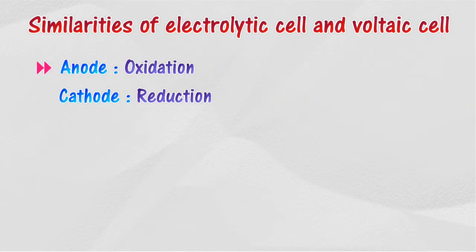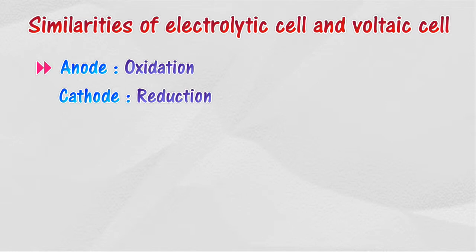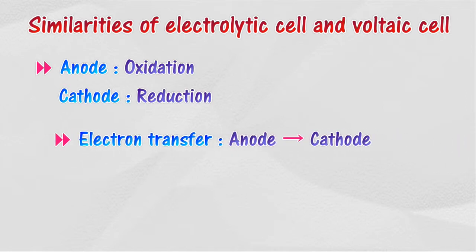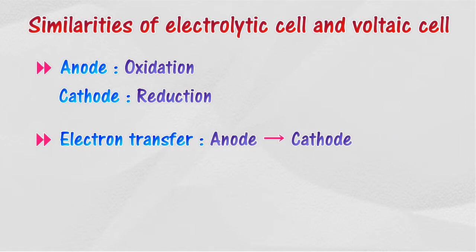Both cells involve oxidation and reduction processes at their electrodes. Oxidation occurs at the anode, while reduction occurs at the cathode. Electrons transfer from the anode to the cathode.